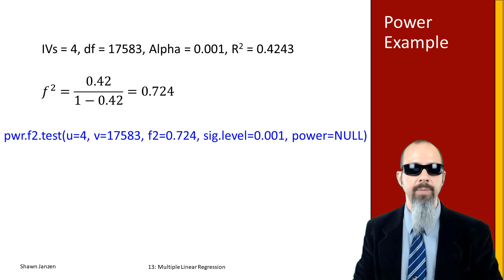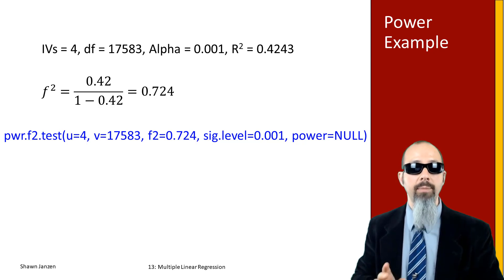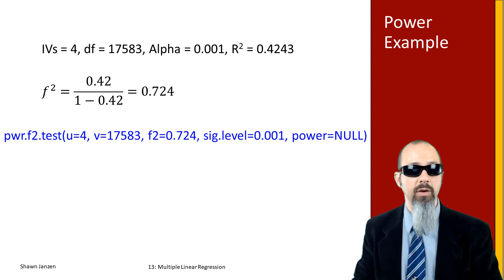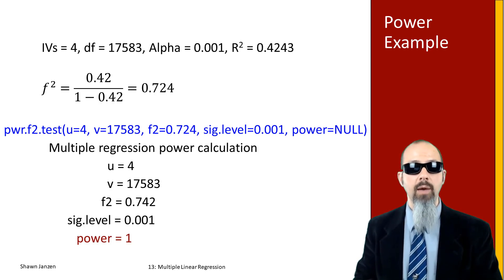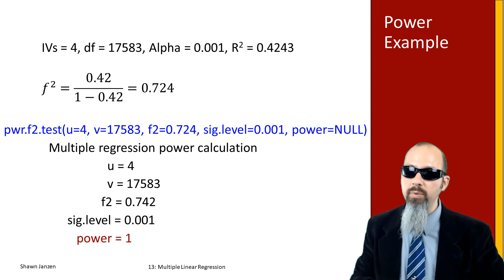Plugging those five values into pwr.f2.test: I have four independent variables as u, v equals 17,583, sig level equals 0.001, f2 value is 0.724, and my power is set to null because I want to know what the power of the test was. When I run that, it tells me that my power equals 1.